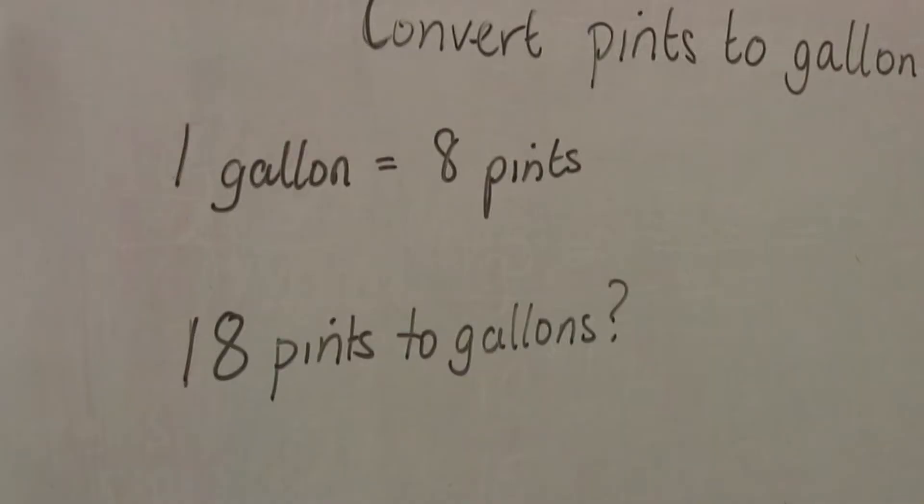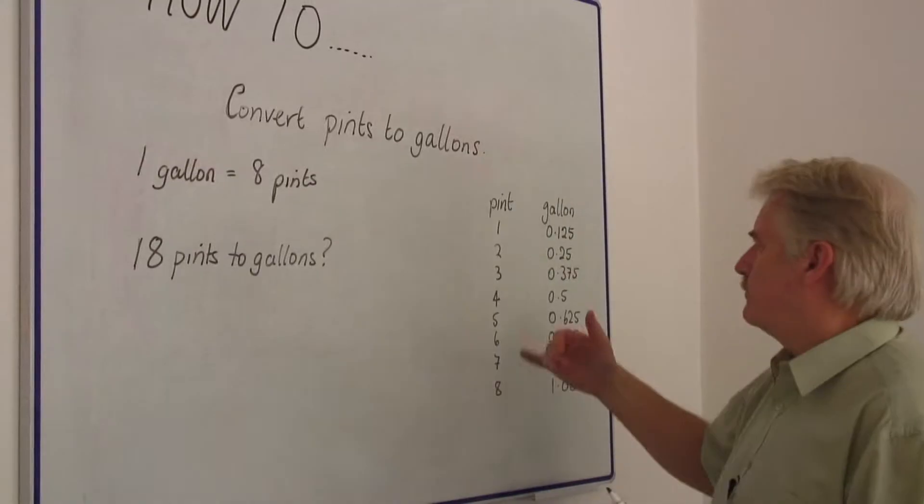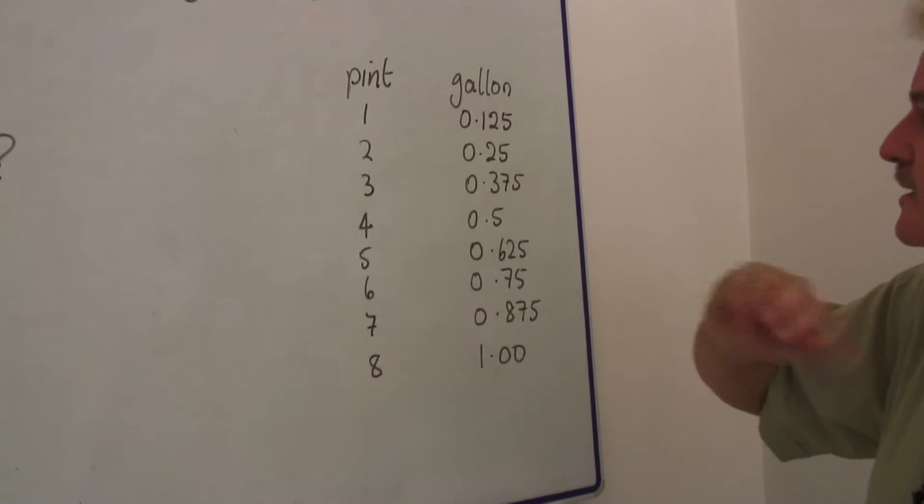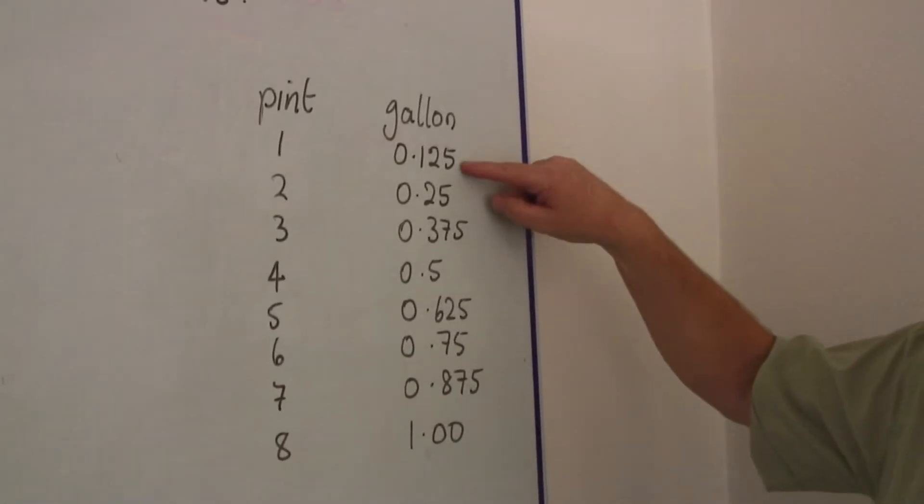So from that we can work out a table and the table covering one, two, three, four, five, six, seven, eight pints and of course in gallons.